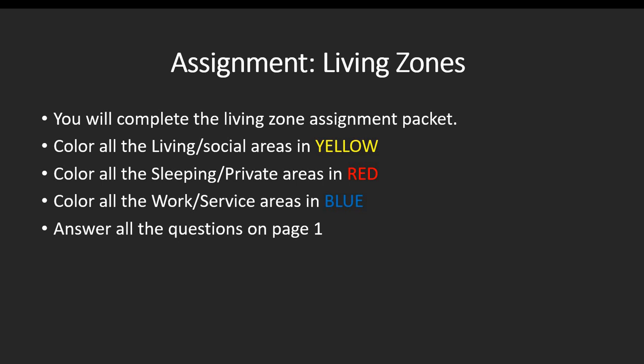Here is your assignment. Make sure you grab the living zone assignment — it's a white piece of paper with questions on the front and a blank floor plan on the back. You are going to color each zone: all living/social areas yellow, all sleeping/private areas red, and all work/service areas blue. You don't have to color any hallways. You will not be able to answer the questions on page one until we've done traffic patterns and furniture arrangement — after that lesson, you can go back and answer those questions. That's your assignment for this lesson on living zones.